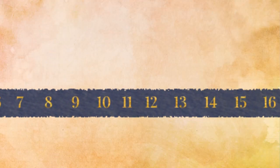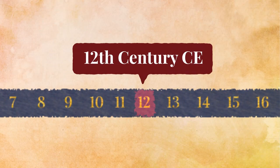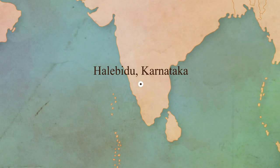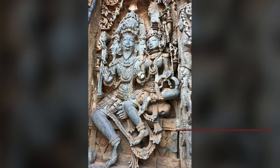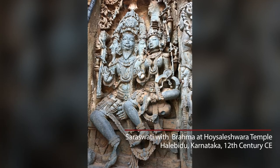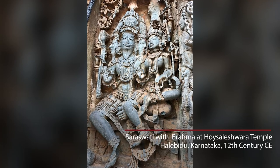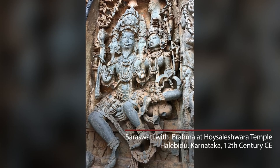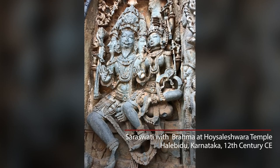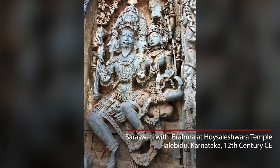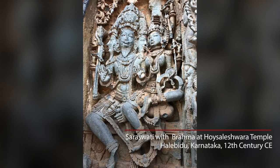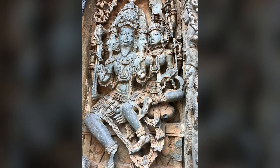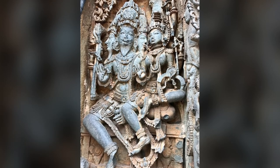In the Hoysala temples and the Khajuraho temples, we find Brahma with Saraswati next to him. So Saraswati has now become a consort, part of a couple, and her independent identity is subsumed under Brahma.